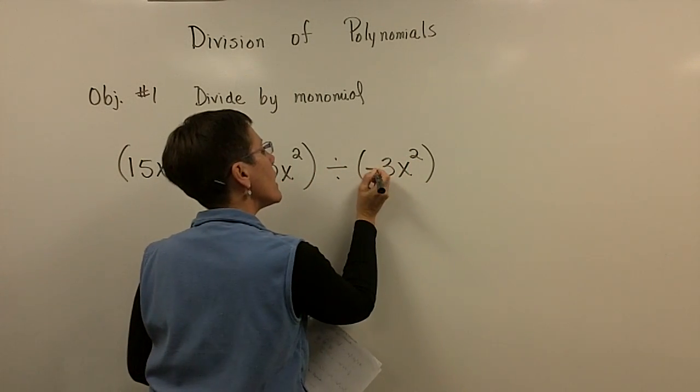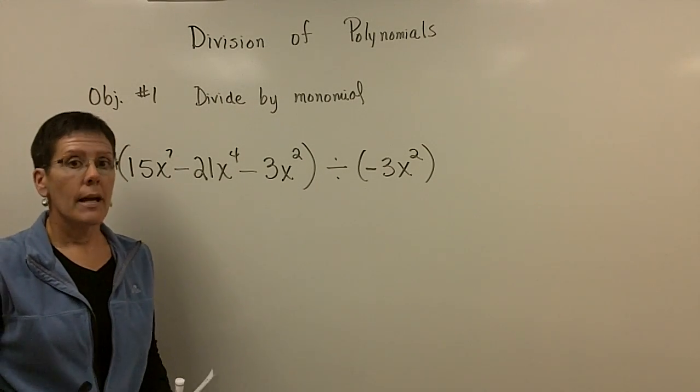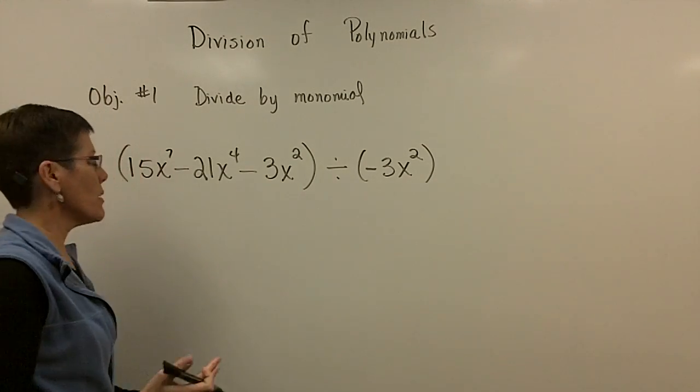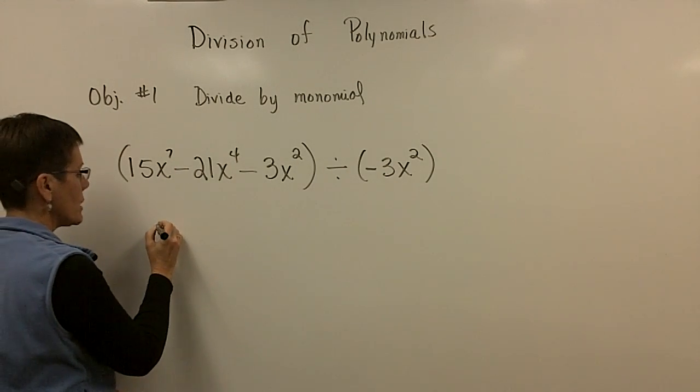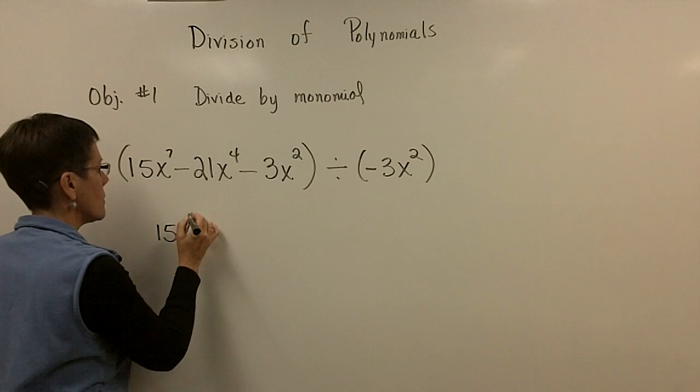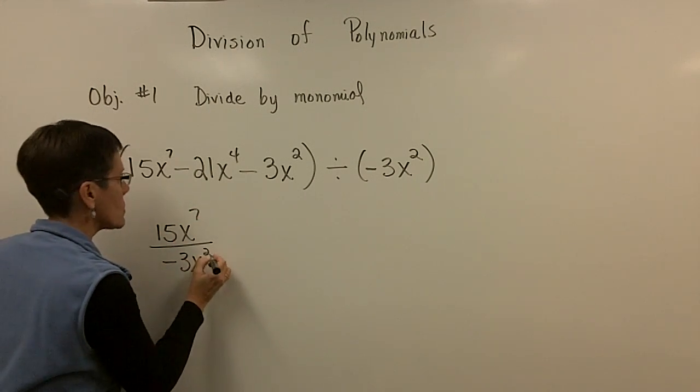And I'd like you to divide it by the monomial, -3x^2. So I'm suggesting that when you want to divide many terms by one, go ahead and put each of those terms with that denominator of -3x^2.